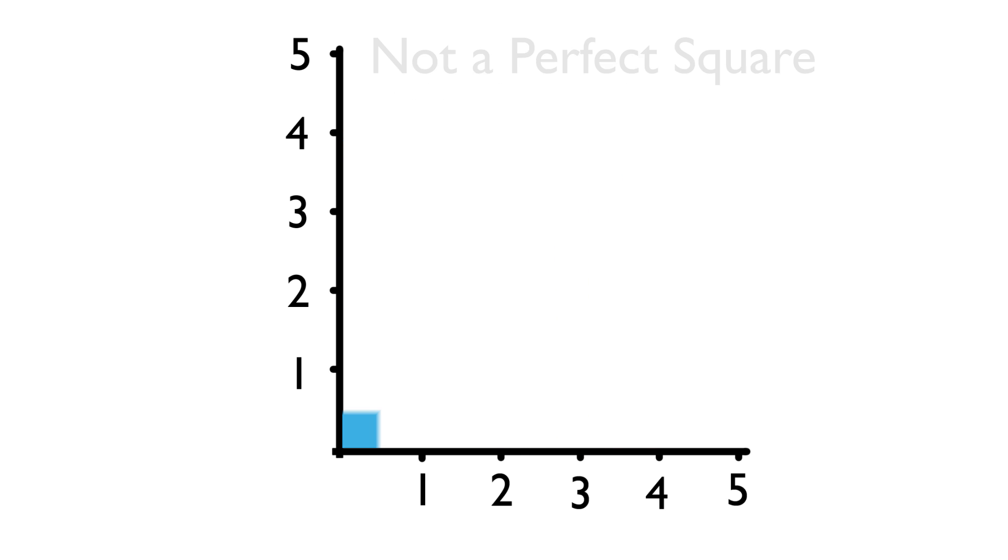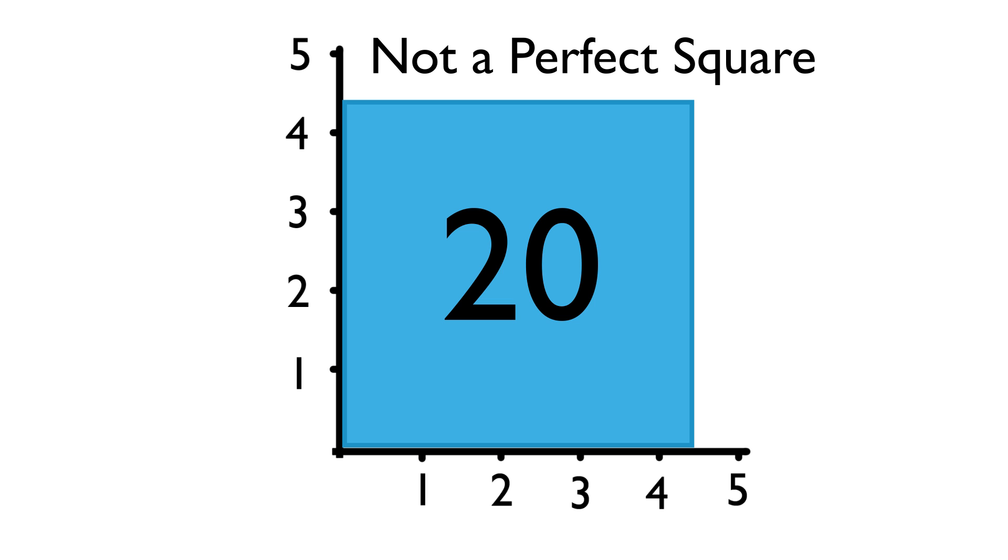If the number isn't a perfect square, like 20, then the square root is a decimal, like 4.472 and so on. So 20 isn't a perfect square.